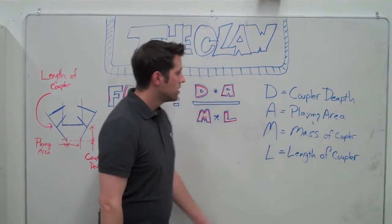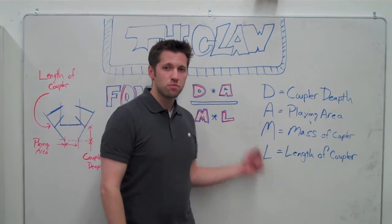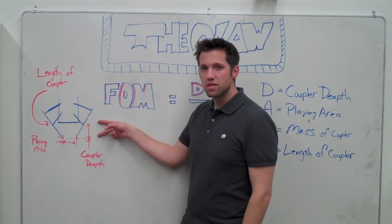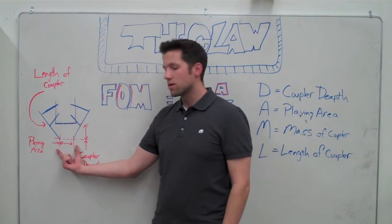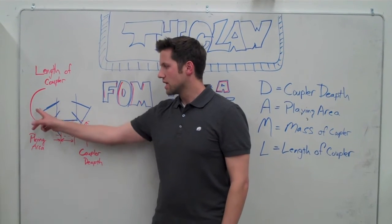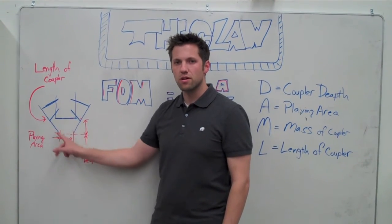So for our figure of merit, we chose these variables to be the most important. As you can see, our coupler depth is between the finger and the base, our playing area is between the fingers, and the length of the coupler is from the first rocker down to the finger, and the mass is the mass of the coupler.